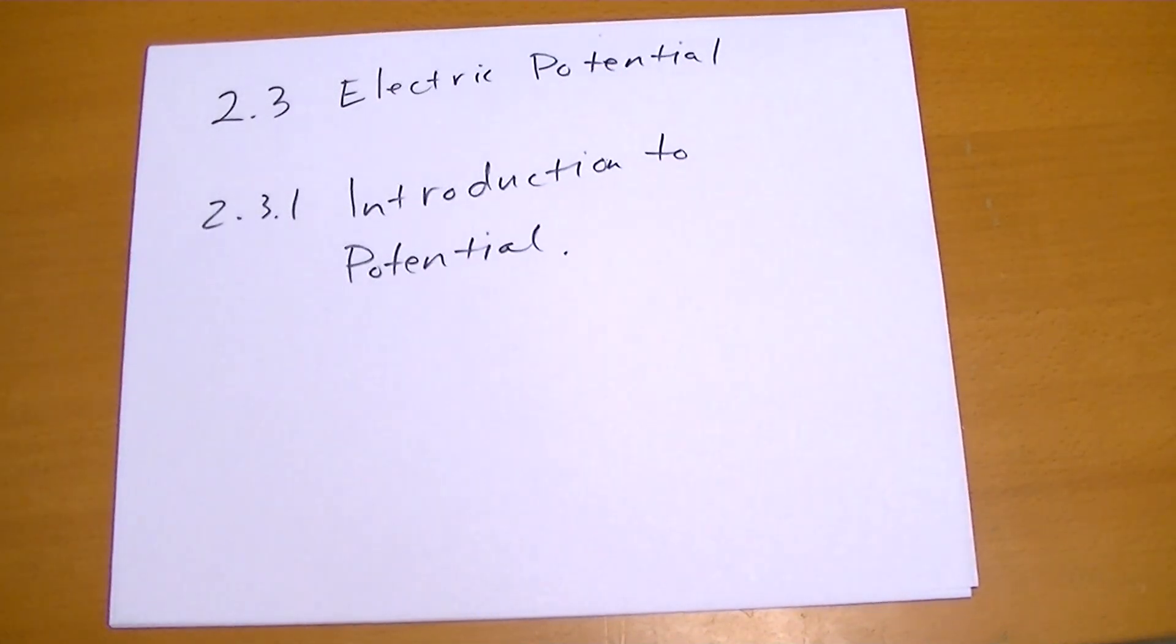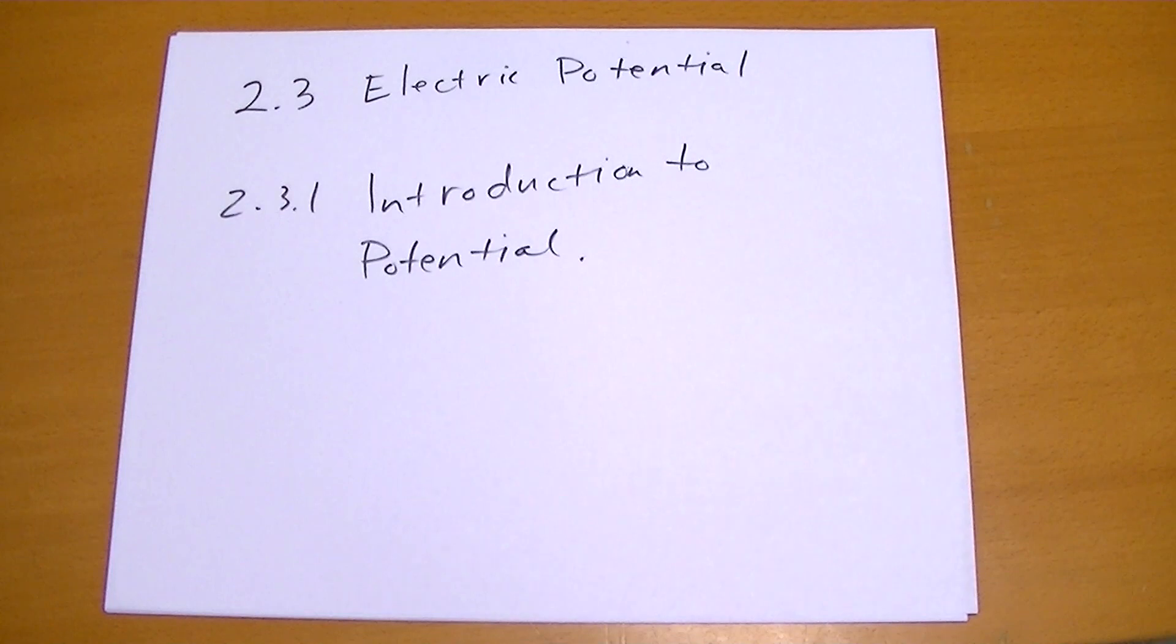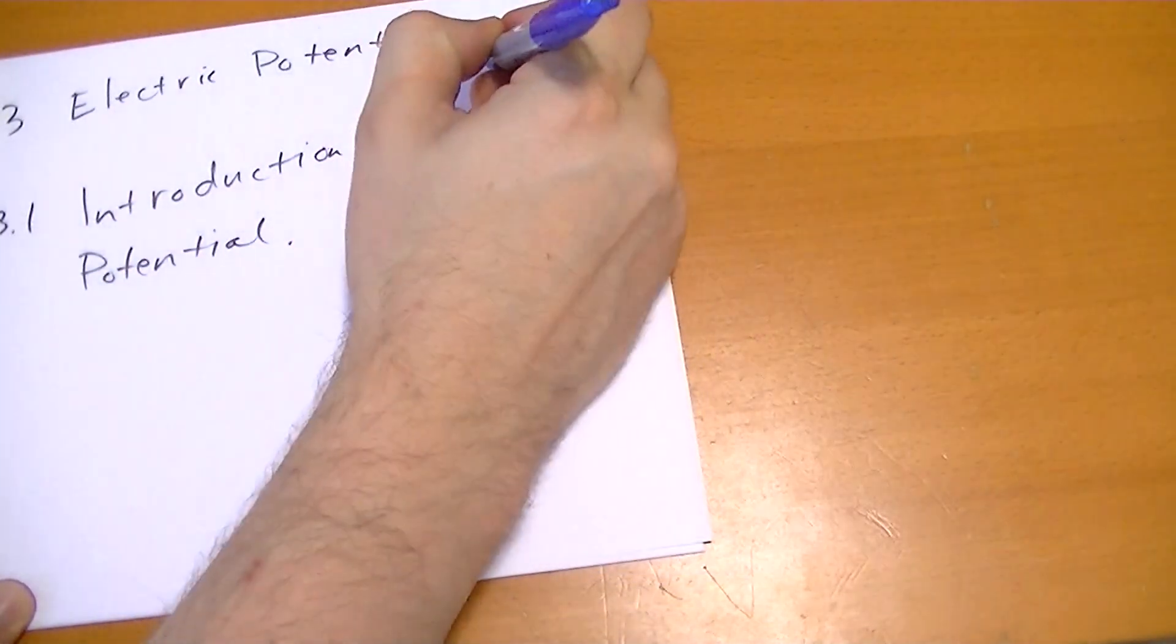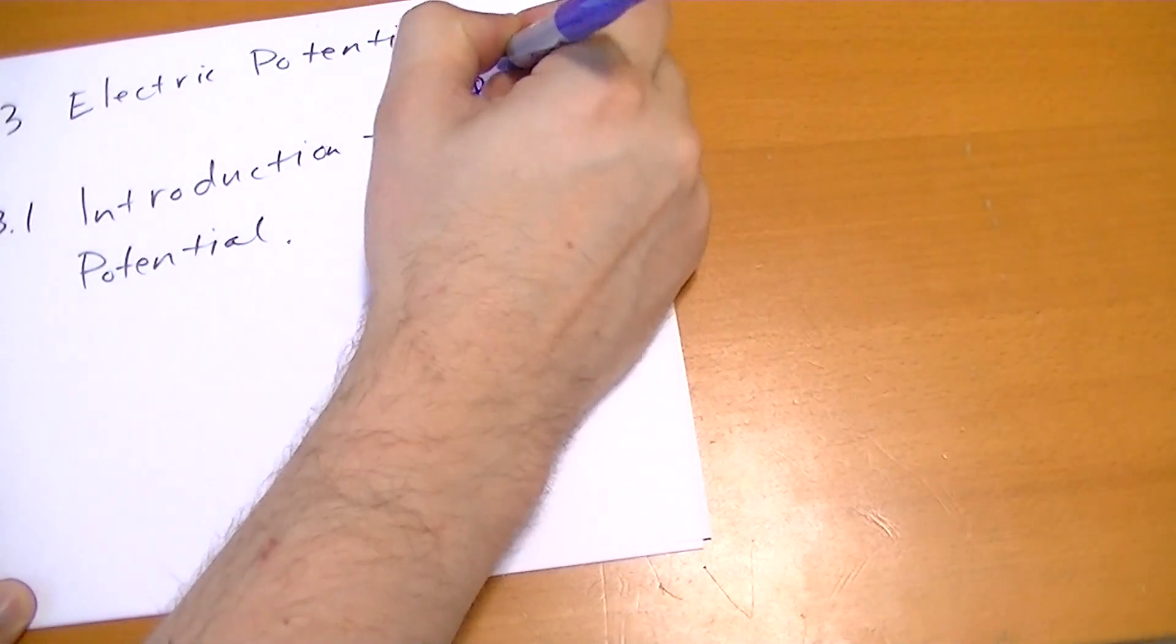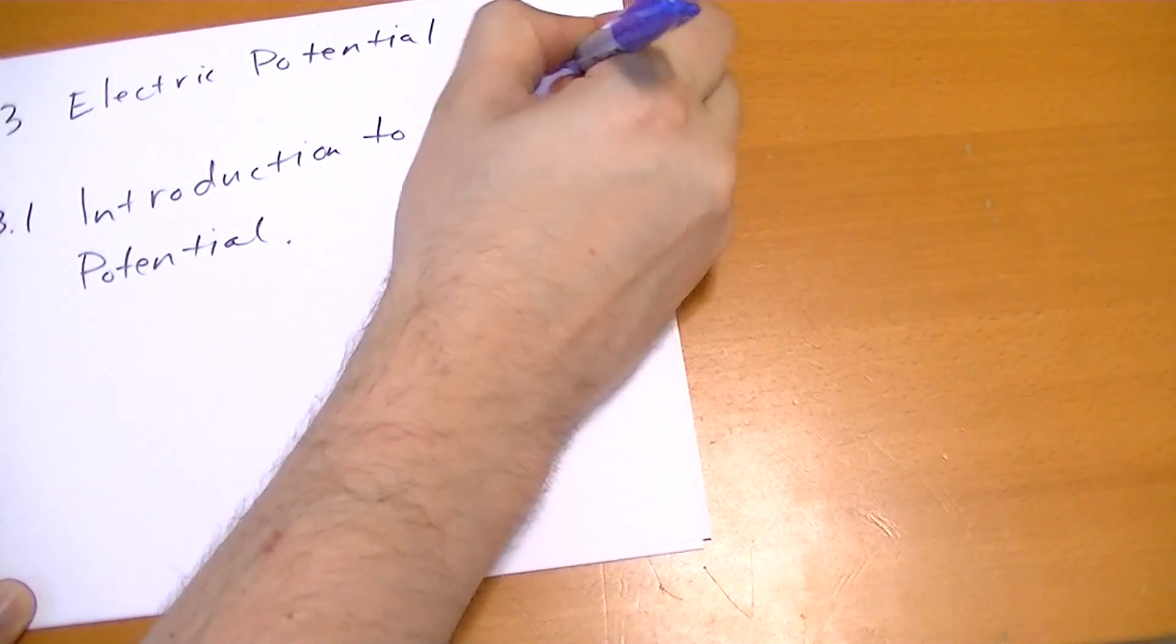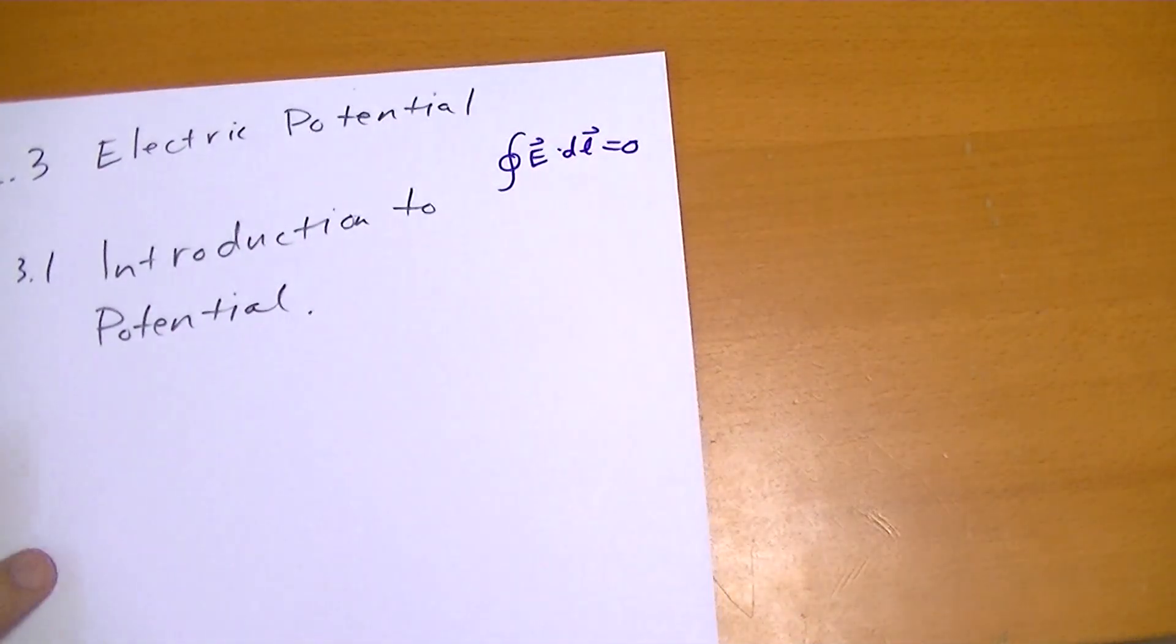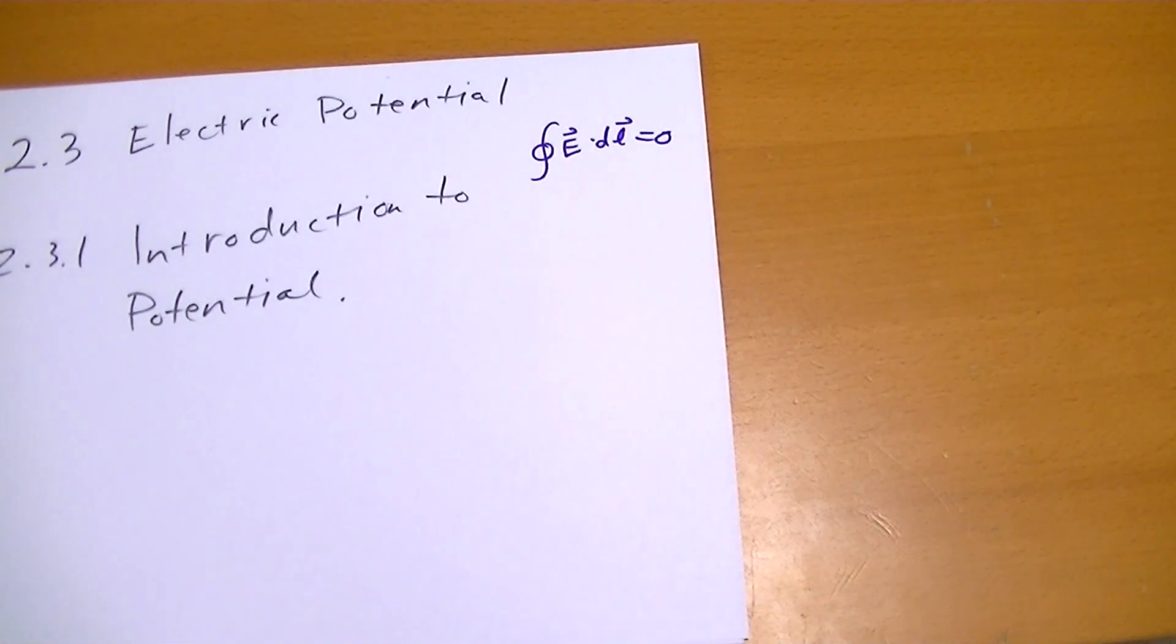So we start off with the basic idea that since the electric field must have a curl of zero, you can't invent an electric field with non-zero curl. Since it must be zero, then we have this concept that over any closed path, E⃗·dL must be zero. And that's Stokes' theorem with the curl. We've walked through that proof already.